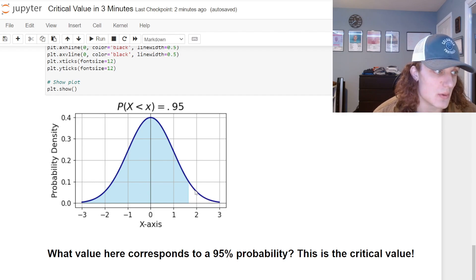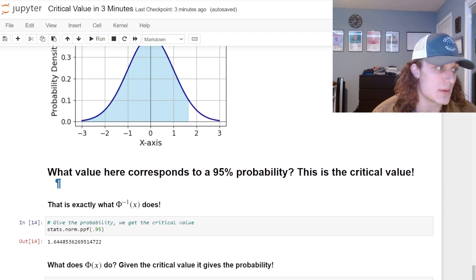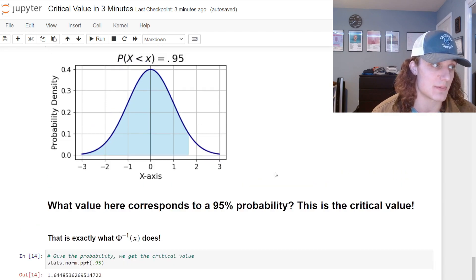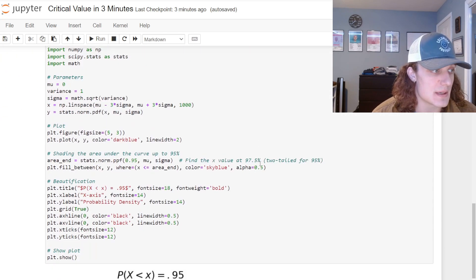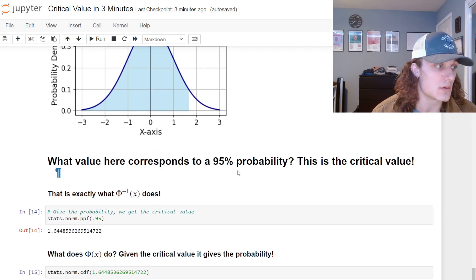What is this value? That value is the critical value. In other words, what value corresponds to a 95% probability? What value for little x do we have to plug in here to get a 95% probability? That is your critical value. That is what capital Φ inverse does.